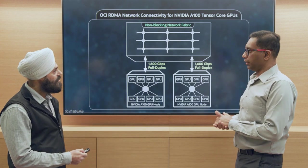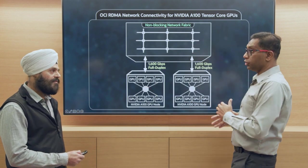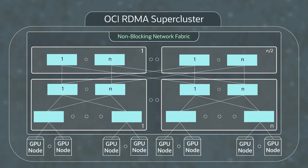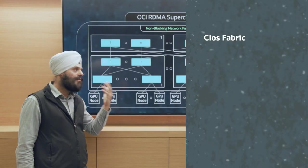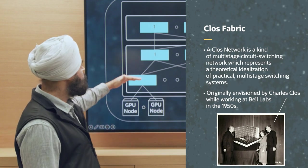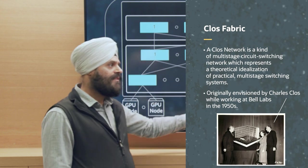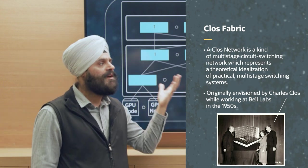The fabric is fully bi-directional and non-blocking — any GPU in the fabric can talk to any other GPU at the same time. Now let's look at the fabric in more detail. We use the word supercluster because it's much larger than an existing cluster network. We have a concept of blocks, with block number one and block number N. Each block has two tiers of what we call the Clos fabric — this is a three-tier Clos network. We plan to scale this network to tens of thousands of GPUs, and we can envision designs scaling over 100,000 GPUs as well.